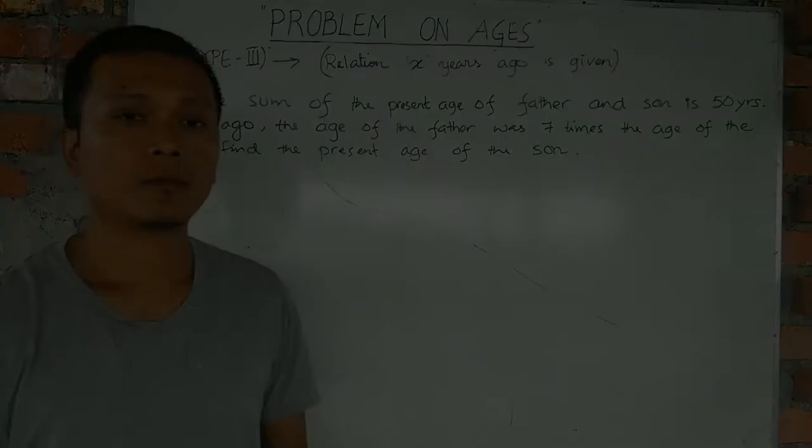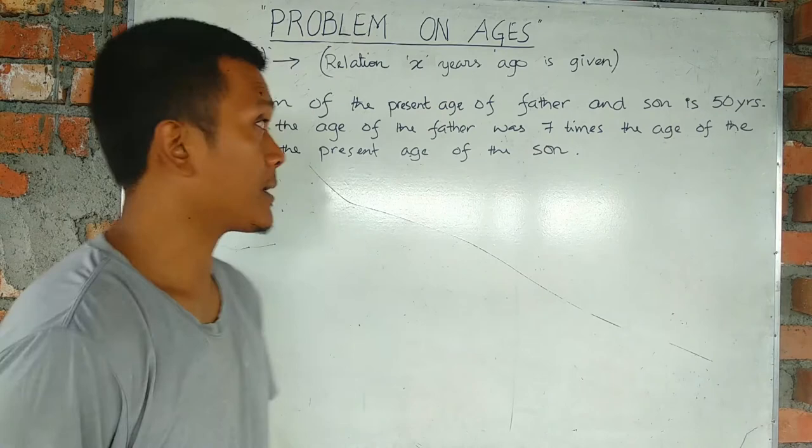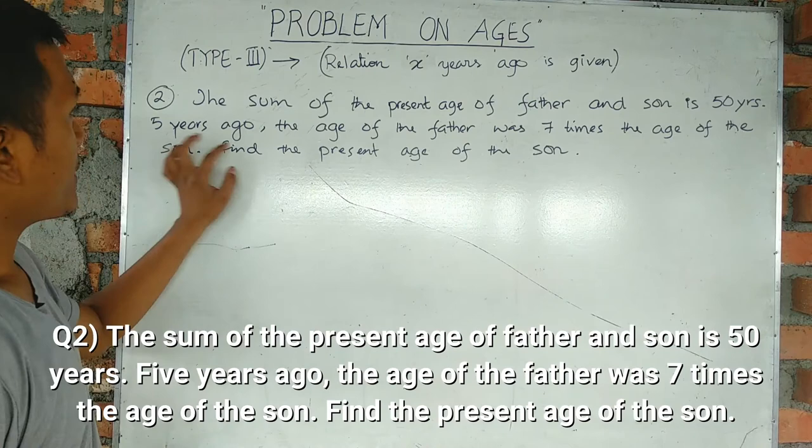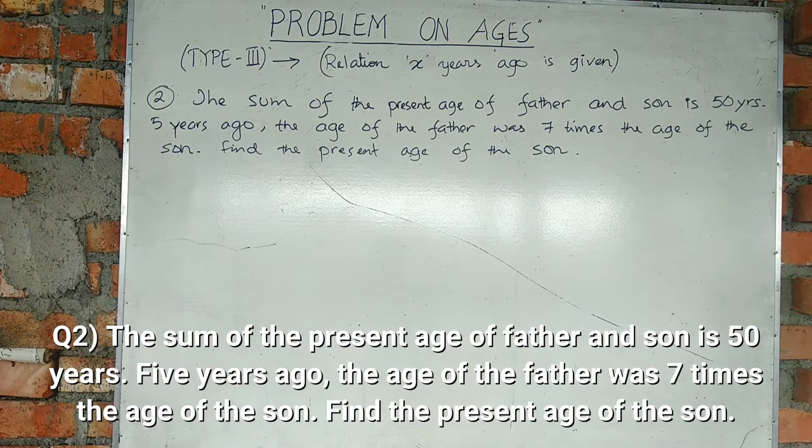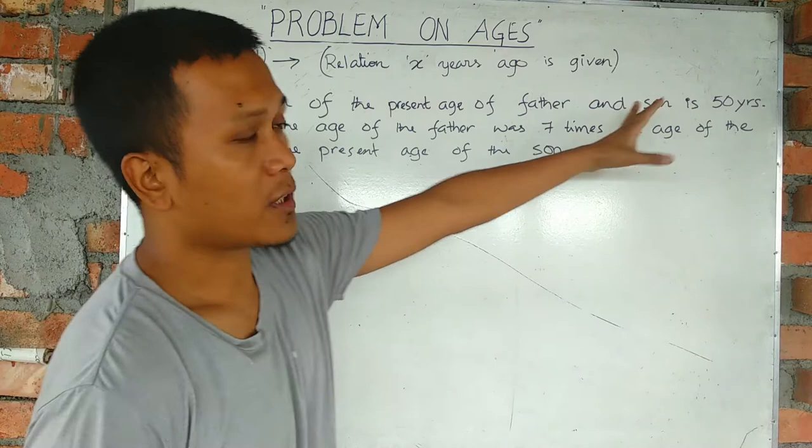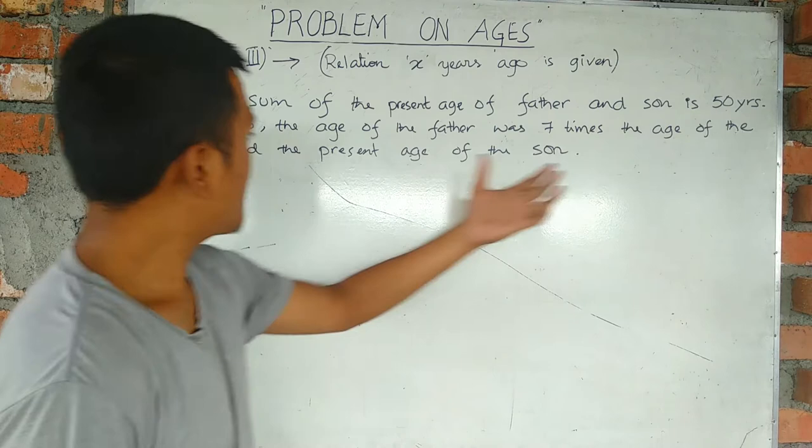Question 2: The sum of the present age of the father and son is 50 years. Five years ago, the age of the father was seven times the age of the son. Find the present age of the son. The present age of father and son is 50 years, so the present of the father is 7 times the present of the son.